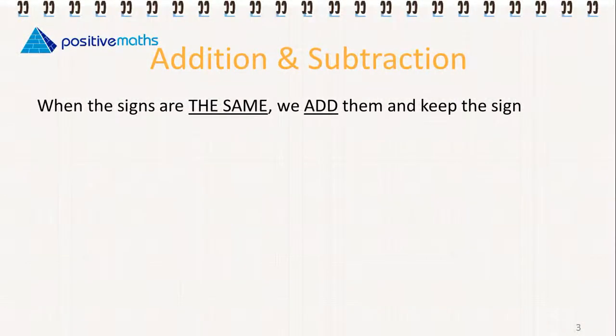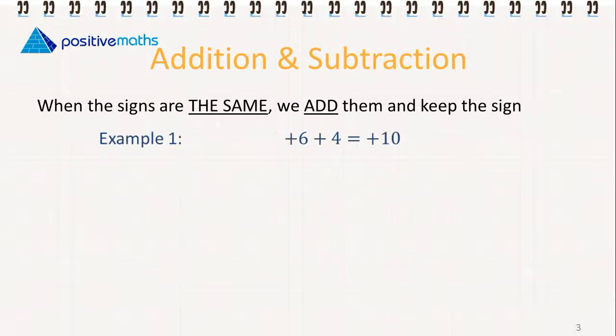Let's go through addition and subtraction of integers. When the signs are the same, we add and we keep the sign. For example, plus 6 plus 4 gives us plus 10 — the signs are the same, we keep the sign and we add the numbers.